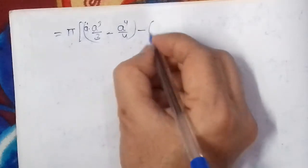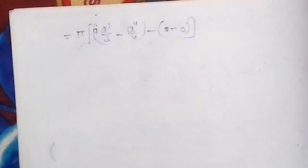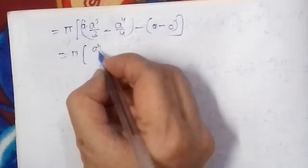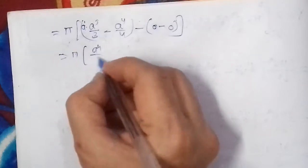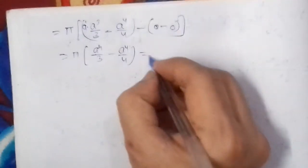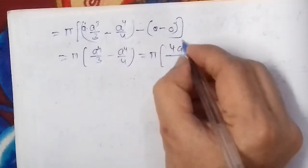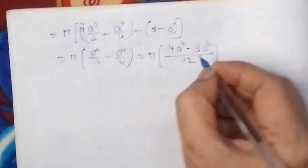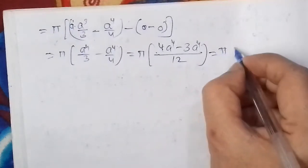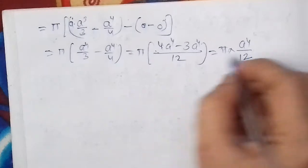At x = A: Aa³/3 - a⁴/4 = a⁴/3 - a⁴/4. At x = 0, the value is 0. Taking LCM of 12: (4a⁴ - 3a⁴)/12 = a⁴/12. Therefore V = π · a⁴/12.